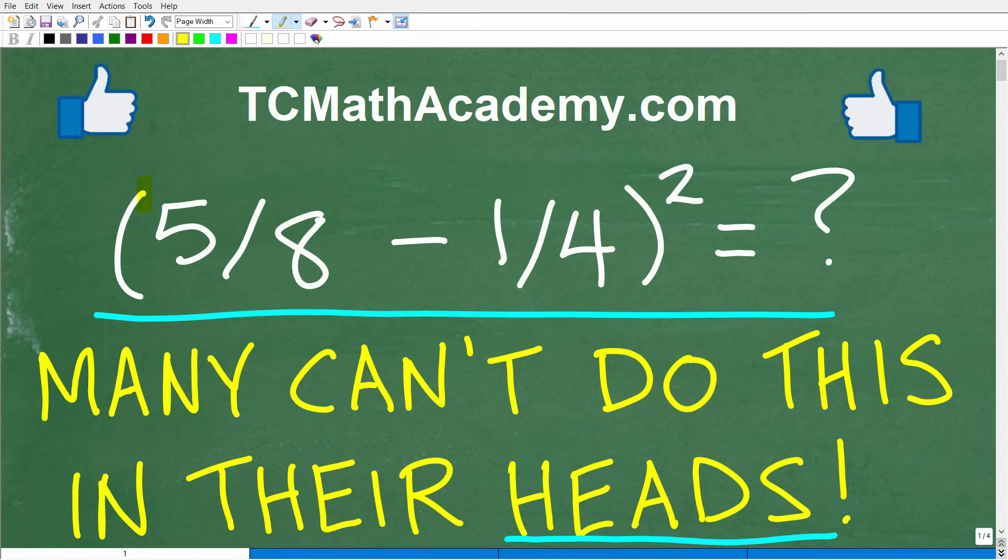And the problem here is parentheses, five-eighths minus one-fourth squared. So the only rules here is just to use your brain. And if you have the answer, go ahead and put that into the comment section. I'll show you the correct answer in just one second, and then we're going to talk about how we can use some mental focus to get the answer to this question.